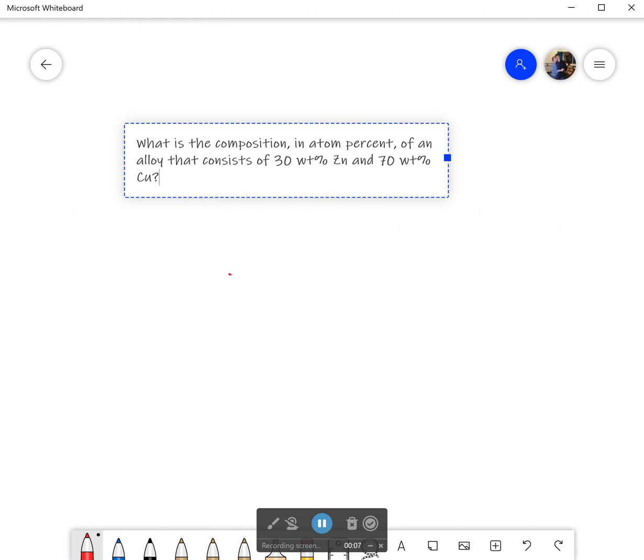In this problem it says, what is the composition in atom percent of an alloy that consists of 30 weight percent zinc and 70 weight percent copper? So I have the weight, but I want now the number of atoms, or at least the percentage of atoms.